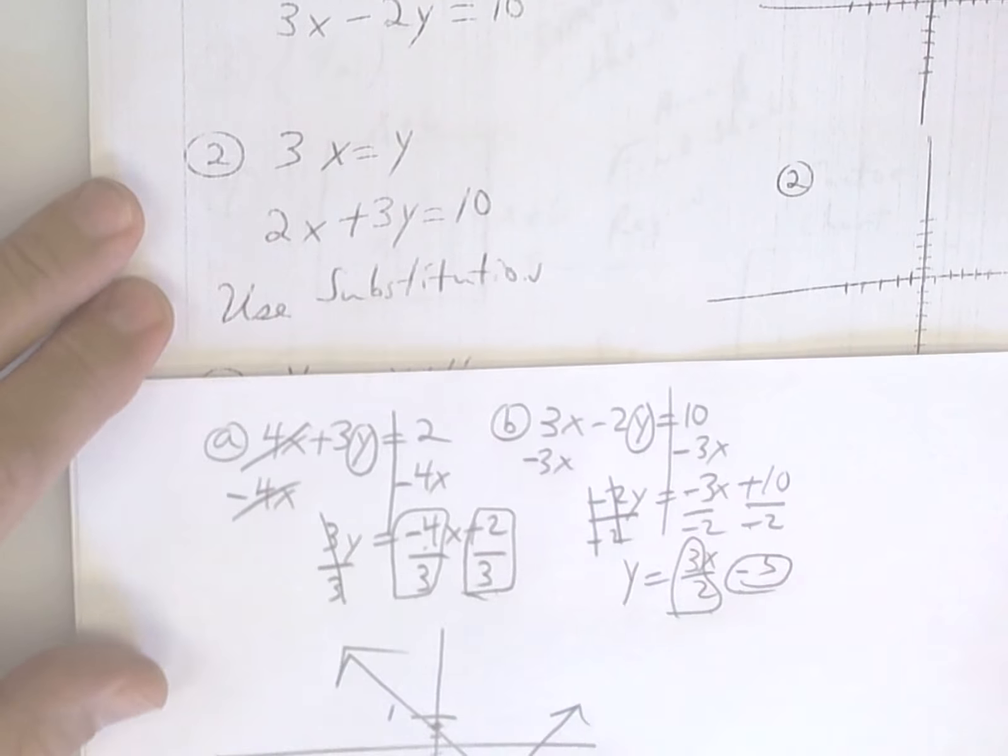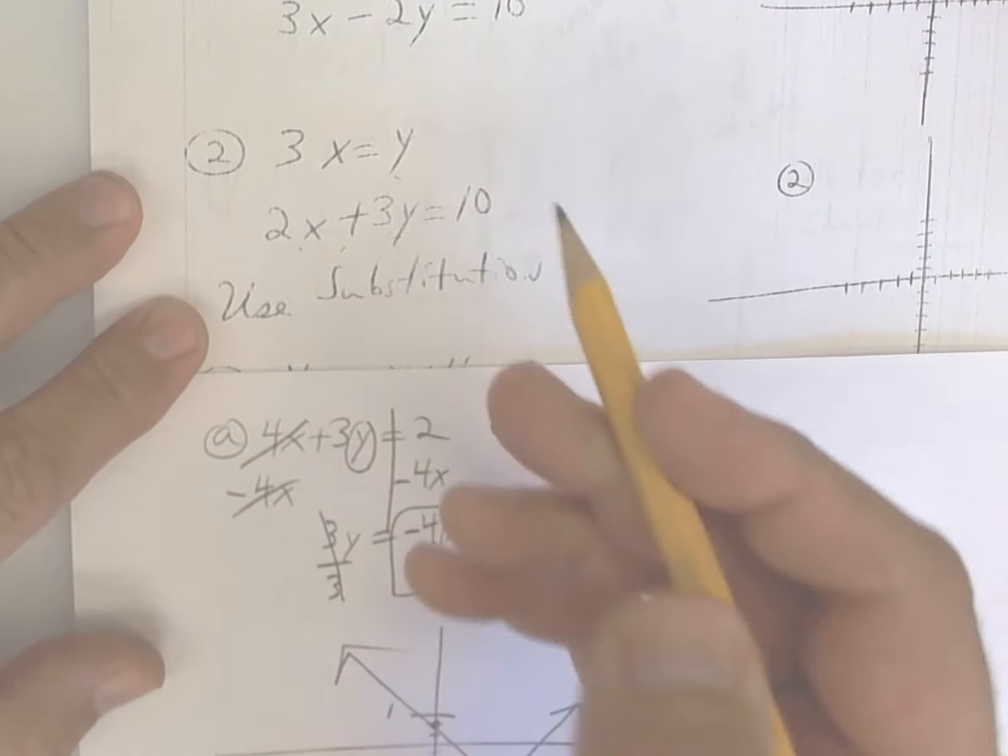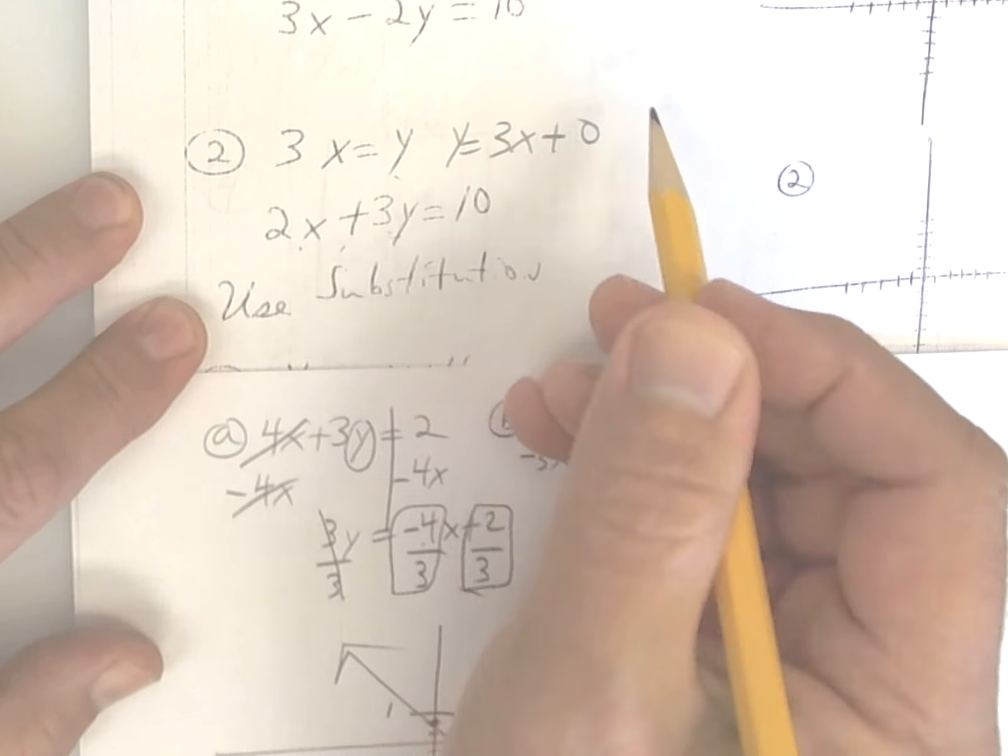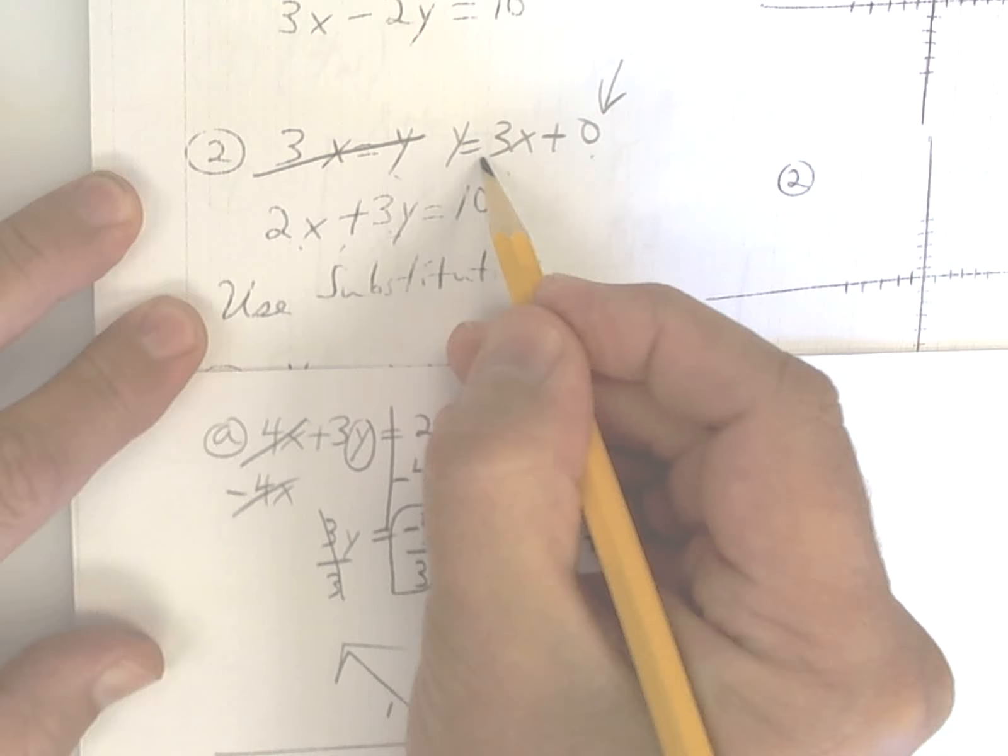You've got to do the same thing for this one. Get y by itself. Subtract 2x, divide by 3. This one already has y by itself. So just rewrite it. The y intercept is 0. Just so you know. The slope is 3 over 1.